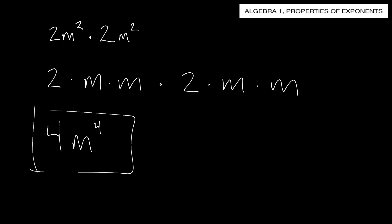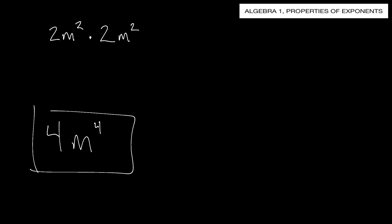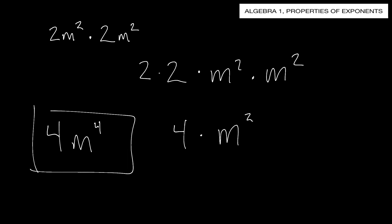Now, instead of having to break it apart, you don't always have to do this - I'm doing this just to help you visualize. What you could do instead is: 2 times 2 gives us 4, and for m squared times m squared, you're going to do m to the 2 plus 2. When you have a similar base - the base here is m - being raised to a power and multiplied together, you're going to add the exponents. So we get 4m to the fourth power.